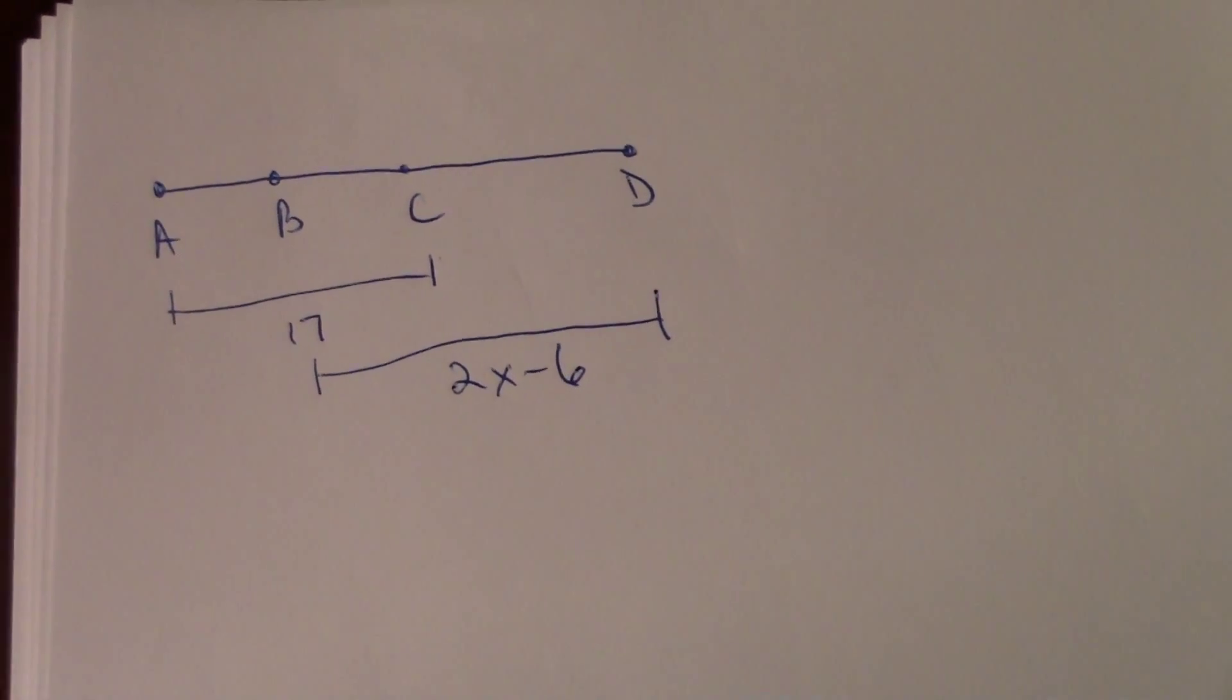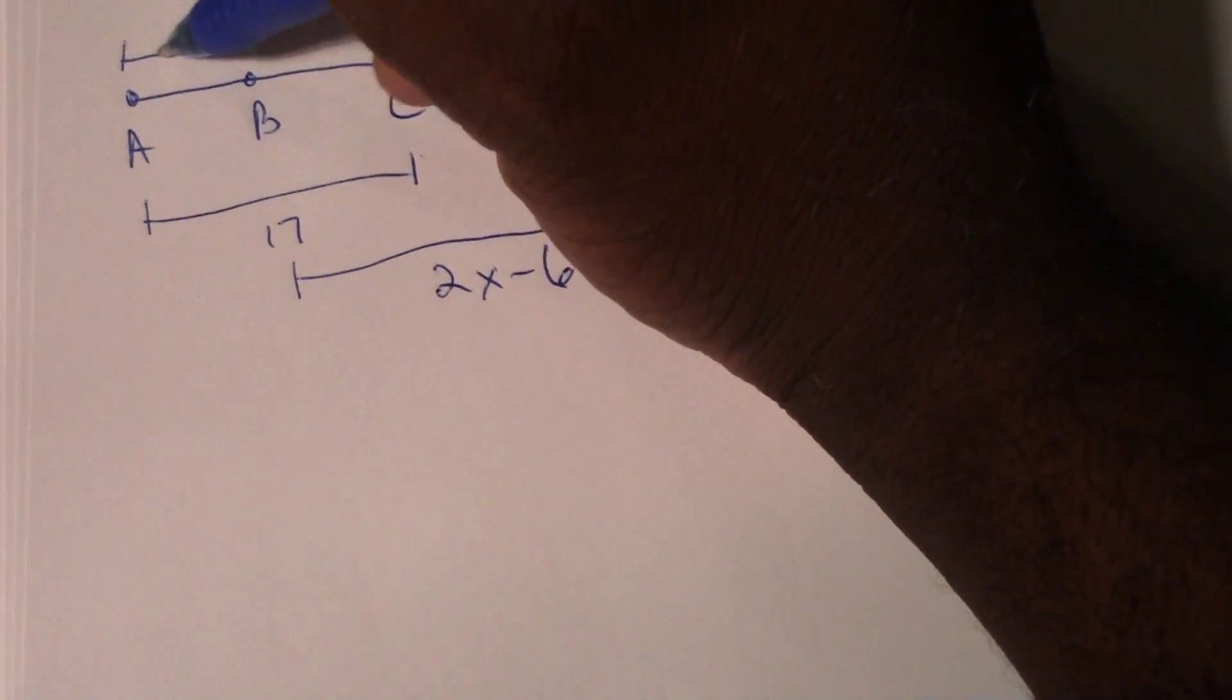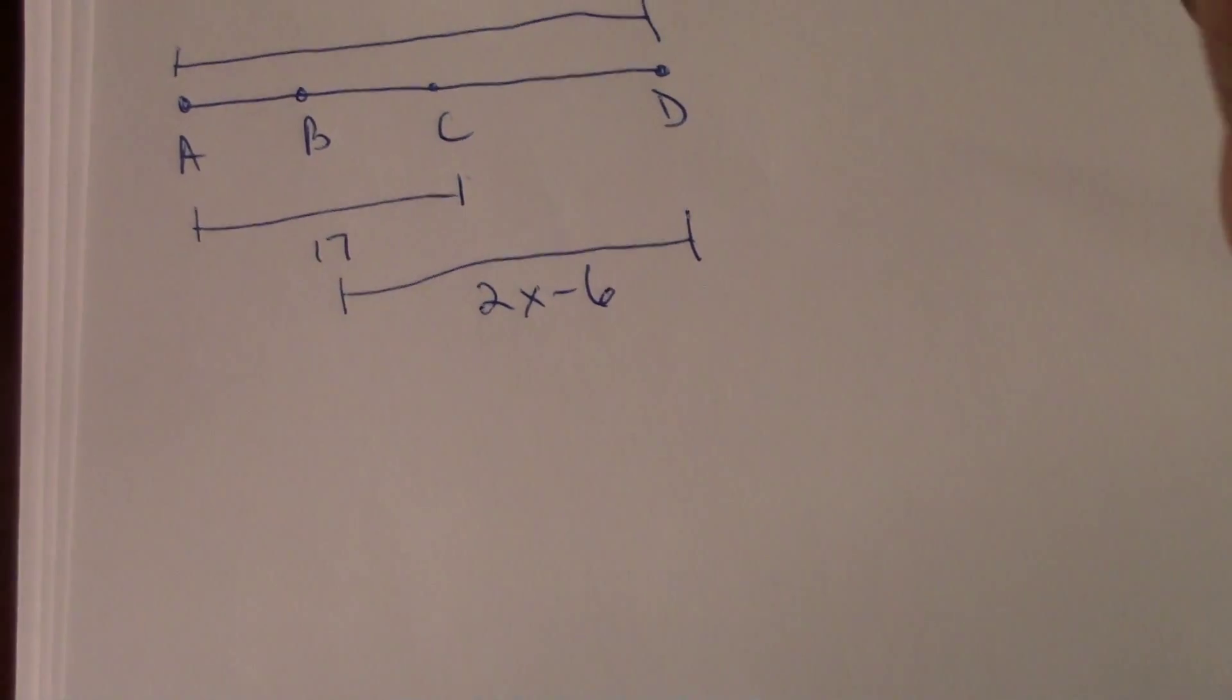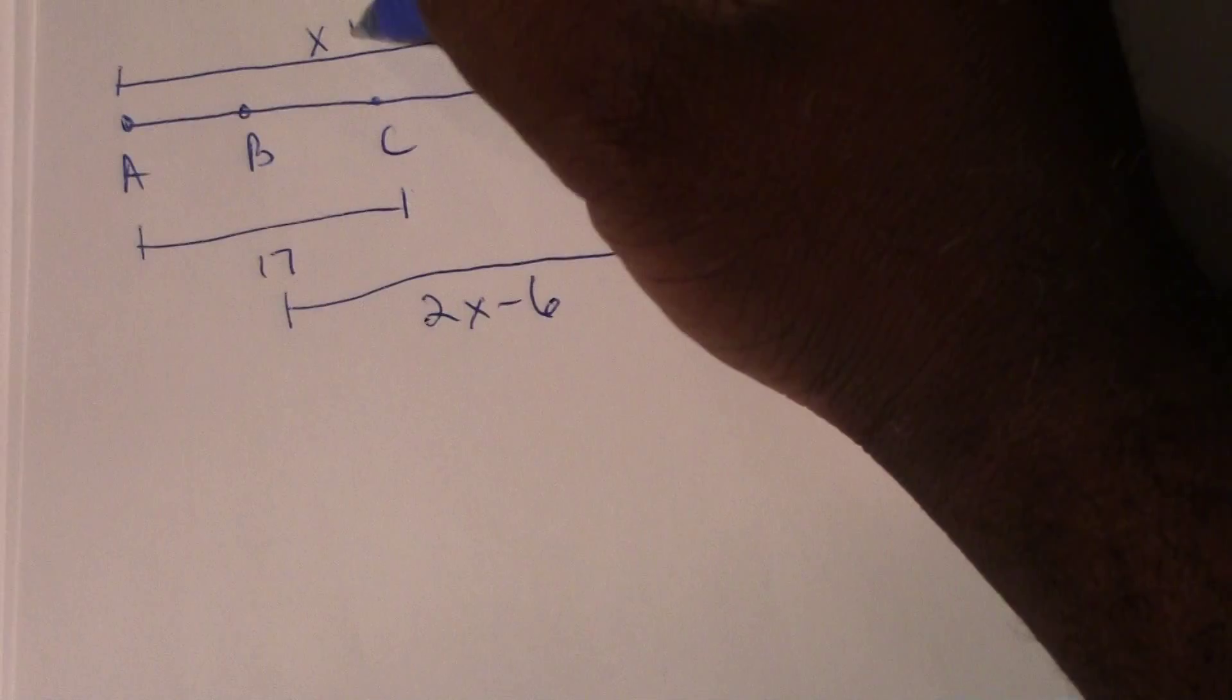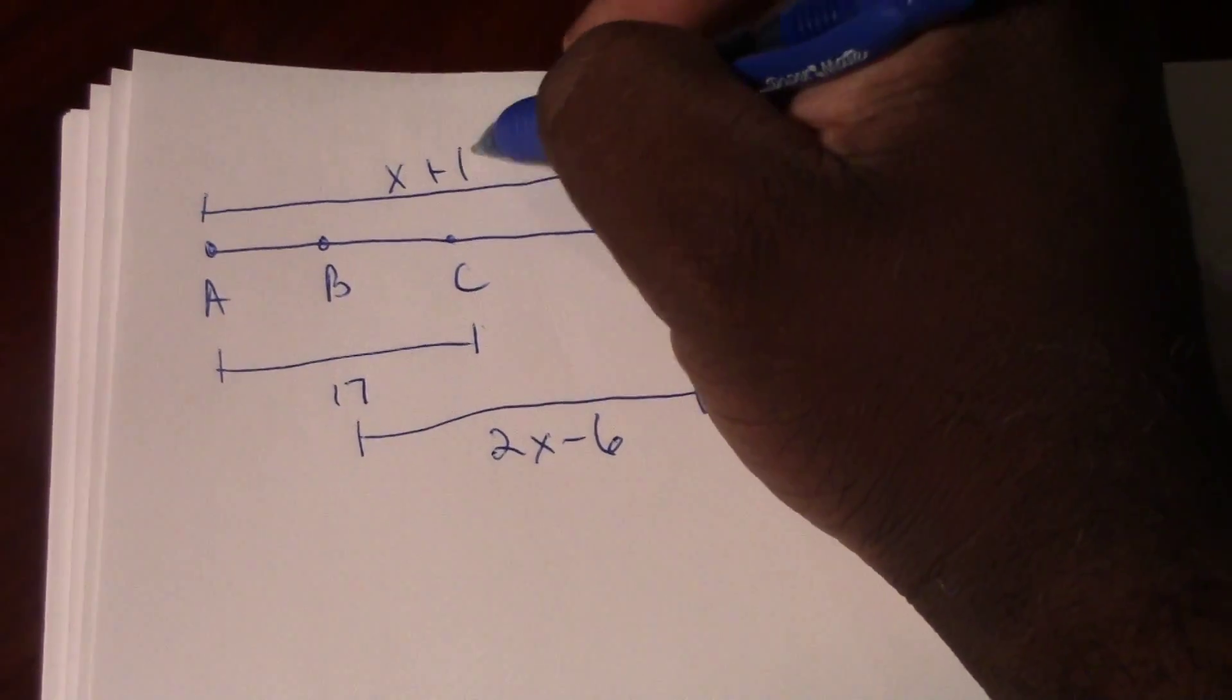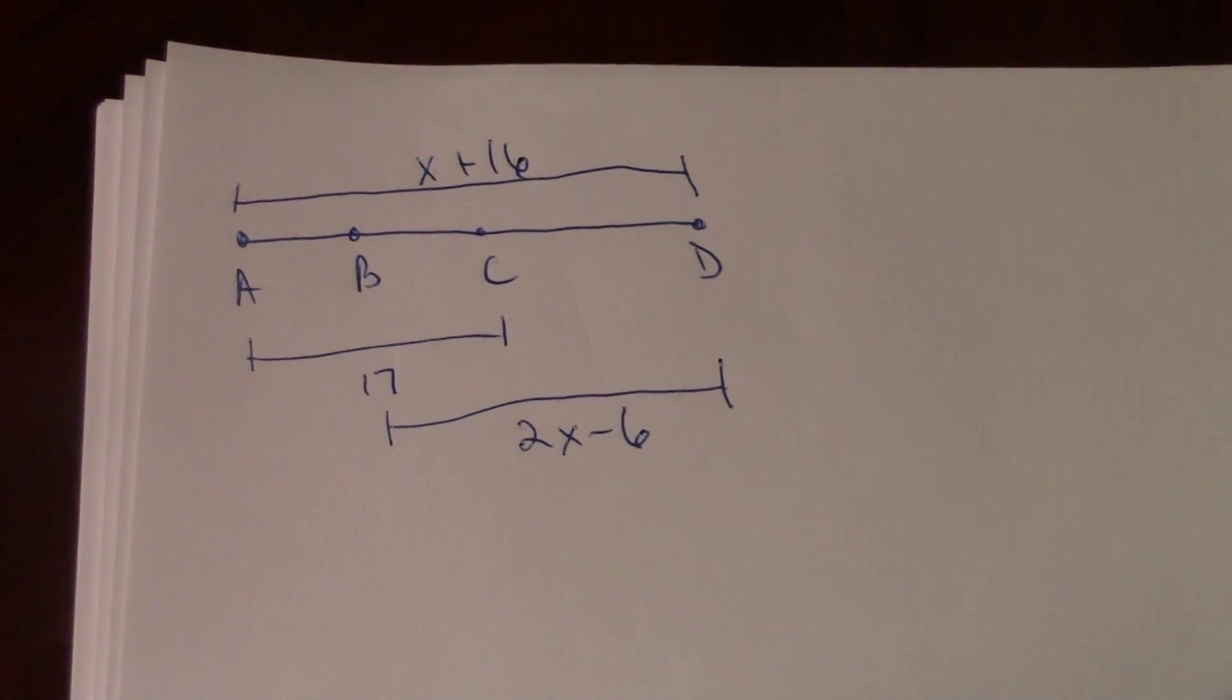We're also told that AD, which is the entire line segment, is going to be X plus 16.